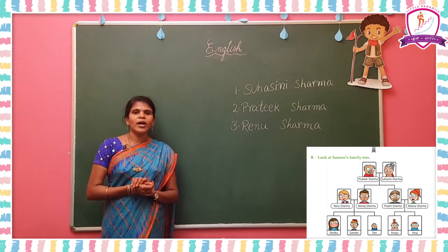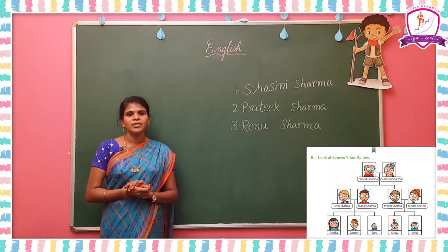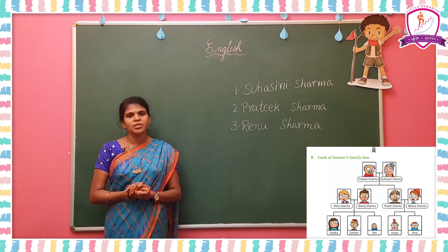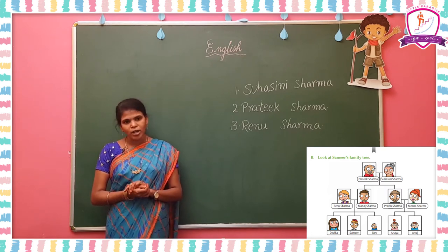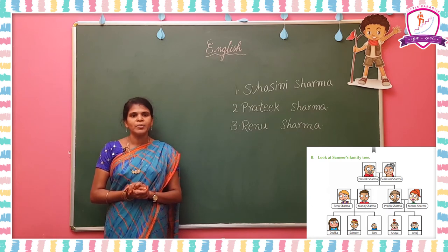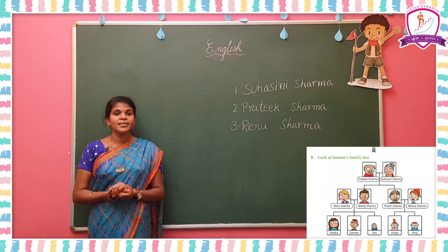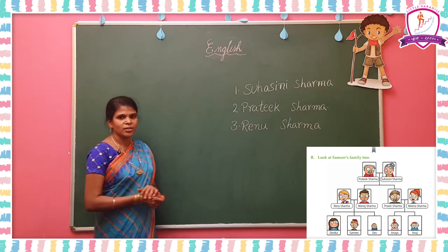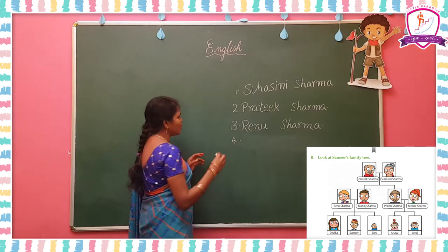Question number 4: What is the name of Samir's uncle? Uncle means your parents' brothers — you call them uncle. Samir's uncle is Praveen Sharma. Write the answer: Praveen Sharma.